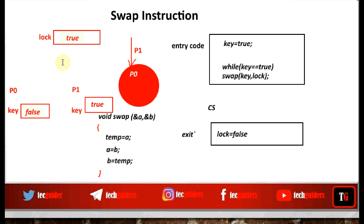What about progress? Because a process in the reminder section will not try to set the lock by executing the swap instruction, a process in the reminder section is not going to block any process wishing to enter the critical section. And what about bounded waiting?